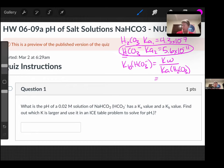Which means that since Kw is 1.0 times 10 to the minus 14, and then we divide it by the Ka1, which is the Ka for carbonic acid, 4.3 times 10 to the minus 7, I get 2.3 times 10 to the minus 8.